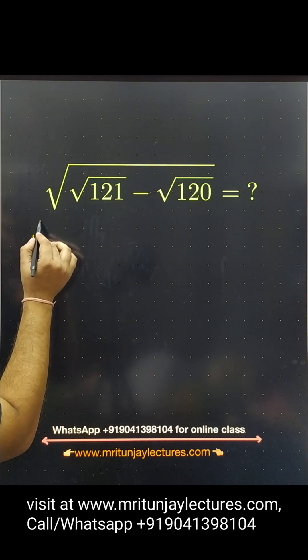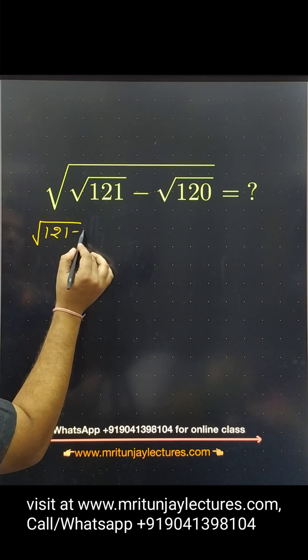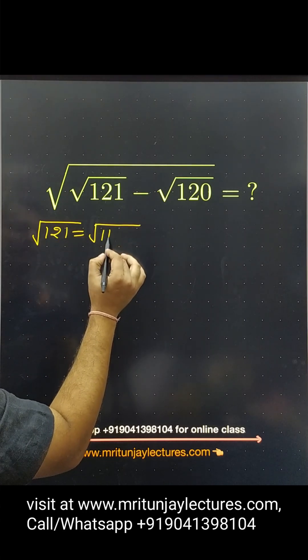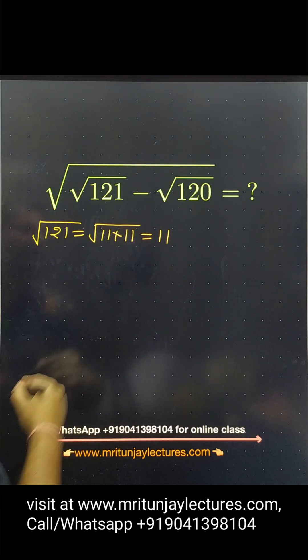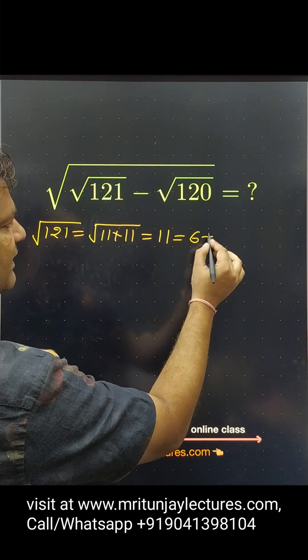I know that √121 is how much? This is written as 11, so basically 11, and this one written as 6 plus 5.